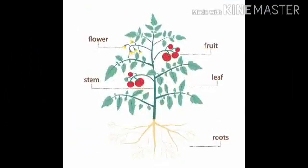Let us see this picture. Number 1: Roots. Number 2: Leaf. Number 3: Fruit. Number 4: Flower. And number 5: Stem.